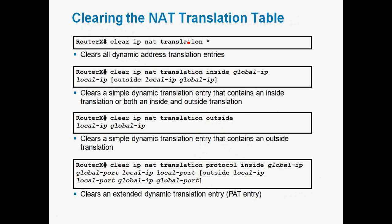To clear the entire NAT translation table in privileged mode, use 'clear ip nat translation *'. To clear a specific translation, use 'clear ip nat translation inside [global IP] [local IP]'. For outside address translations, use 'clear ip nat translation outside [local IP] [global IP]'.